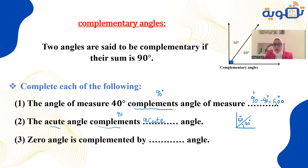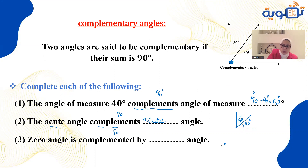A zero angle has a measure of zero — meaning nothing. Its complement must bring it to 90 degrees, so zero needs 90 more degrees. Therefore, the complement of a zero angle is a right angle.